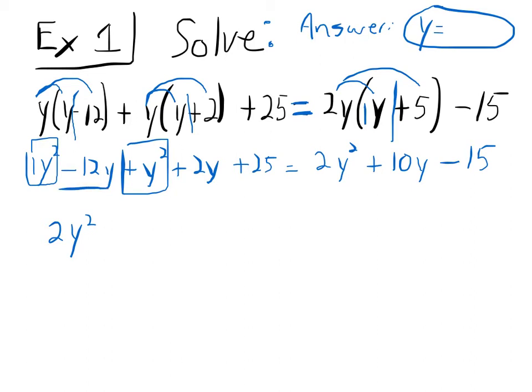And then I have this negative 12y and positive 2y. So when I combine those, it would get me negative 10y, and then it would be plus 25. Over to this side, can I combine any of these terms? 2y squared - no, I cannot. So I'm just going to rewrite: 2y squared plus 10y minus 15.